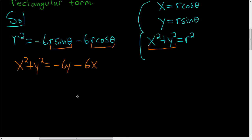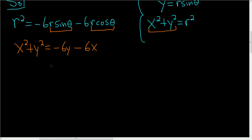Let's go ahead and add these 6y and 6x to both sides. When we do that we end up with x squared plus 6x, adding the 6x to both sides, and then adding the 6y will give us plus y squared plus 6y equals 0.